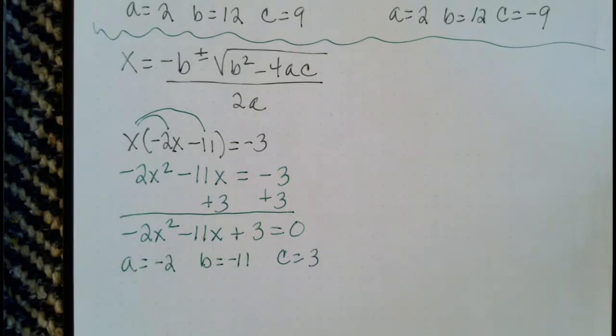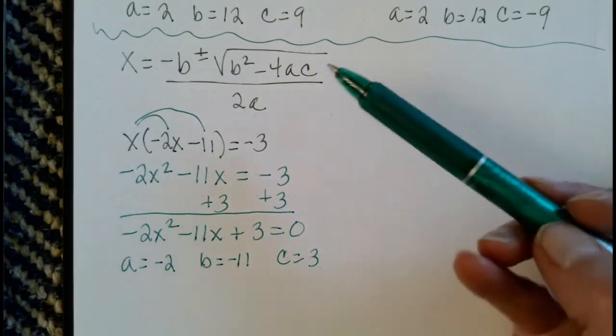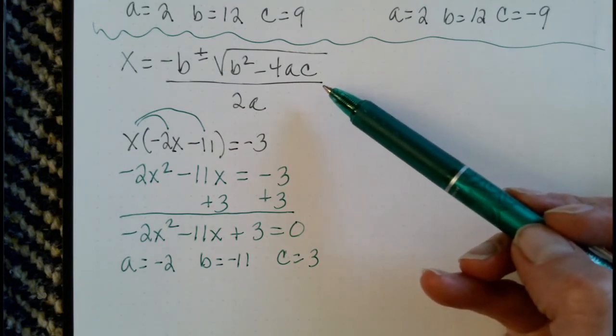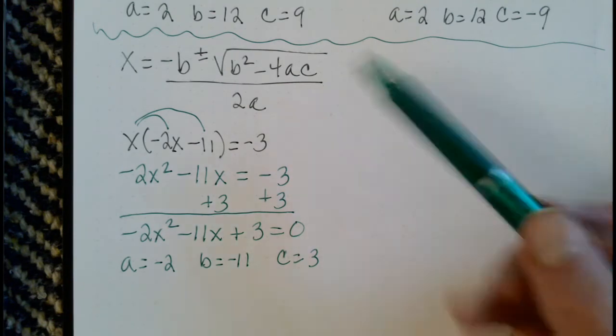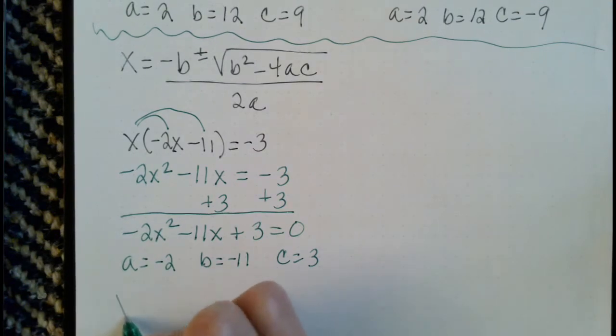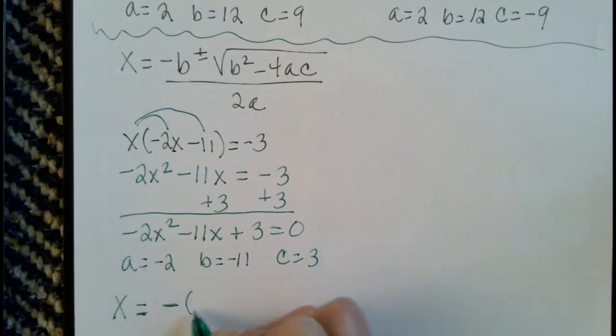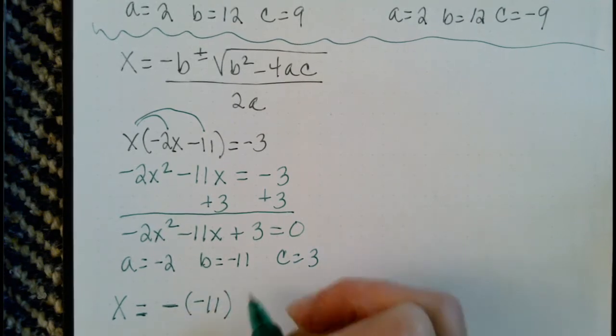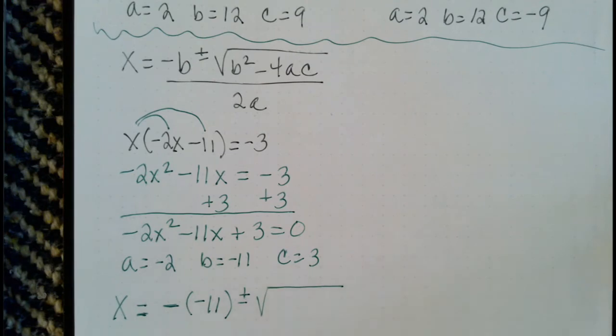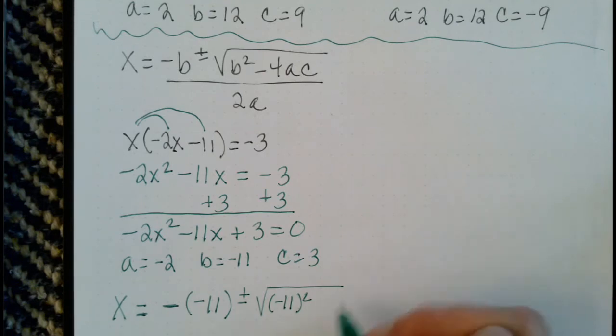And we're going to fill those values back into the quadratic formula that I've been trying to write down before I do every problem here. So it's going to be x equals negative, or the opposite, of negative 11, plus or minus the square root of b squared, negative 11 squared,